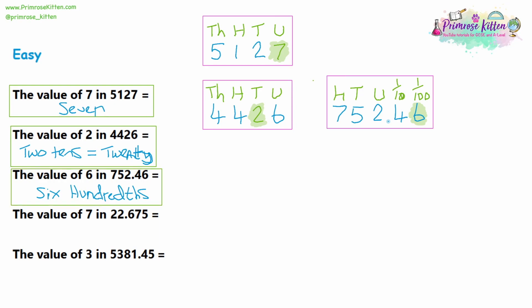Now let's take a look at question four. We have 22.675. You can write down the place value names: units and tens, and on the other side of the decimal place, tenths, hundredths, and thousandths. We've been asked to find the value of the seven. The seven is in the hundredths column, so our answer is seven hundredths.